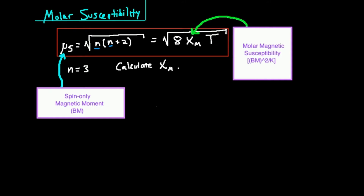We can actually determine the number of unpaired electrons if we can calculate either one of these two things: either the molar magnetic susceptibility or the spin-only magnetic moment. So in the next few videos we're going to do some practice problems using these conjoined equations. For the most part, it's really just rearranging the equation to solve for what you need.